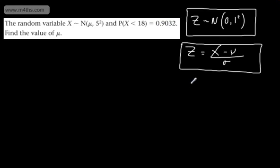So what I'm now going to do is make this substitution, and I'm going to say the probability that Z is less than, and all I'm going to do now is put this in. So X in this particular case will be 18. So we have 18 minus μ. μ is what we need to find, and we divide this now by the standard deviation.